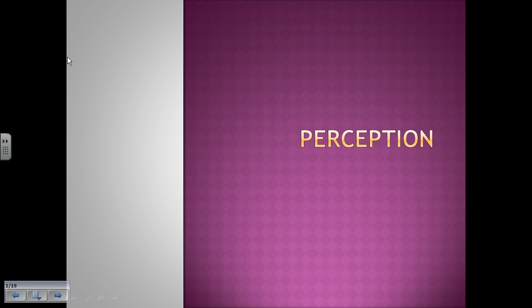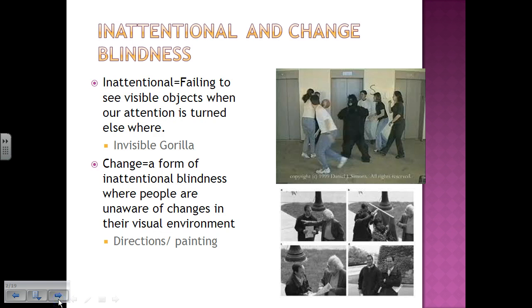We're going to start off by looking at something called inattentional and change blindness. Inattentional and change blindness is where sometimes we don't always see what's going on around us because we're too focused on looking at other things.